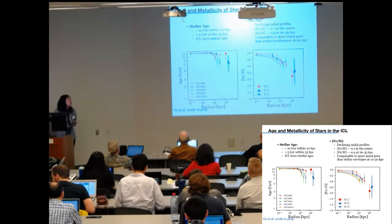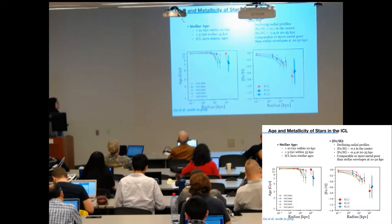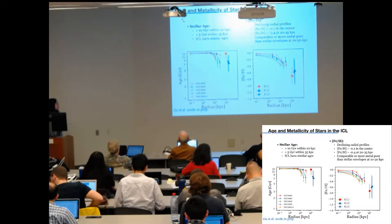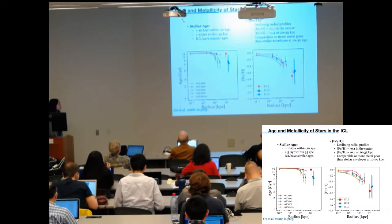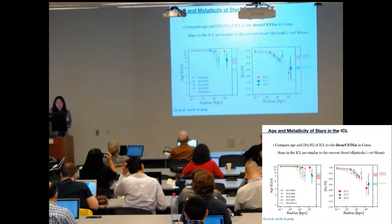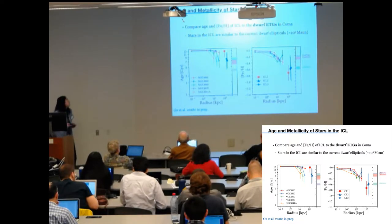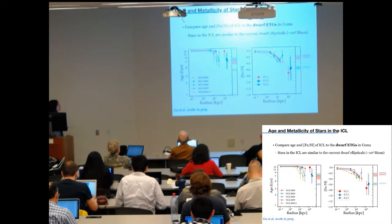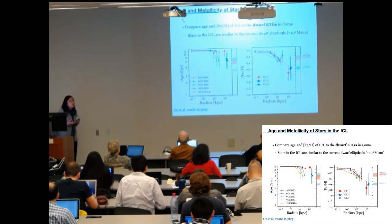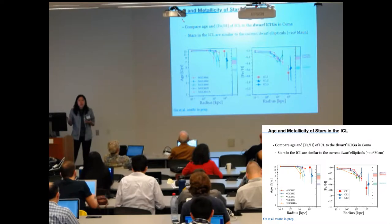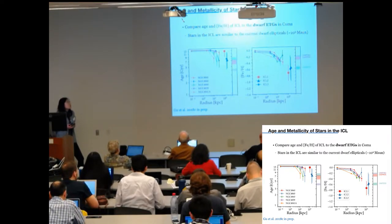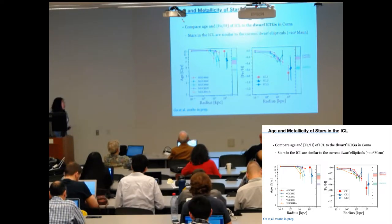And this figure shows the radial profile of stellar age and stellar metallicity. So the stellar content beyond 100 kiloparsecs are old. And their metallicities are comparable or more metal poor compared to the region at 20 to 35 kiloparsecs. We have three dwarf ellipticals in our sample. So we further compare the stellar population to them as well. So the stellar age, both the stellar age and stellar metallicities are consistent between the ICL region and the dwarf ellipticals. So the formation of the intracluster light would be from partial tidal stripping of the outskirts of massive galaxies and/or the disruption of dwarf galaxies. But it seems unlikely that they are from the major merger of massive galaxies.